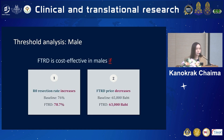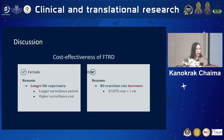For threshold analysis, FTRD would be cost-effective in male if the R0 resection rate — the complete resection rate — increases to 78.7%, or if the FTRD price decreases to 63,000 baht. The reason FTRD is cost-effective for female can be explained by life expectancy: female life expectancy is higher than male by about five years, leading to a longer surveillance period and higher surveillance costs, making FTRD more cost-effective. For male, FTRD can be cost-effective if tumor size is less than one centimeter, because that would lead to higher R0 resection rates.